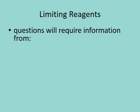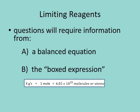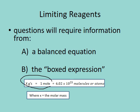For limiting reagents, we're going to need information from a couple of sources. Firstly, we're going to require a balanced equation. And then secondly, we're going to need what I like to call the boxed expression. The boxed expression contains three pieces of information: it's got x grams, it's got one mole, and it's got Avogadro's number, where x is going to act as a molar mass. Generally, we're really only going to need this portion of the expression to solve these questions.